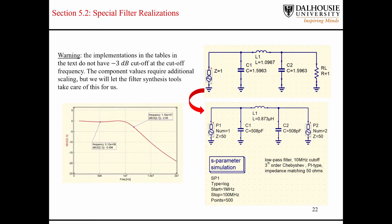I want to point out that the Chebyshev filter coefficients from table 1-4b do not have a minus 3 dB cutoff at the cutoff frequency. So when we design this low-pass filter using that table and look at its frequency response on the left, you can see that at minus 3 dB we're nowhere near the 10 MHz cutoff frequency. So rather than using that table, we're going to use QUCS Studio to tell us the ratios of the filter coefficients.